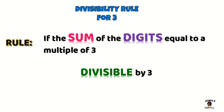The divisibility rule for three tells us that if the sum of our digits is equal to a multiple of three, then that number is divisible by three. Remember, the digits are the numbers from zero to nine that make up your numbers. So if the sum of these digits equals a multiple of three, then that number is divisible by three.